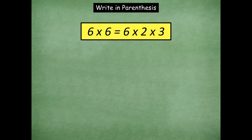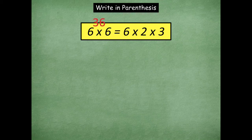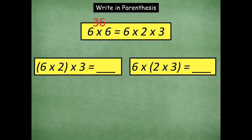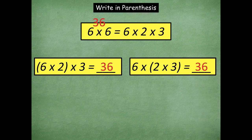Go ahead and solve this problem using whichever way you would like and write it on your dry erase board. Click pause if you need more time. So six times six is 36. If I put parentheses around the first two, I do six times two first, which is 12, and 12 times three is 36. Or in the second problem, two times three is six, and six times six is 36. Whichever way you want is absolutely fine.